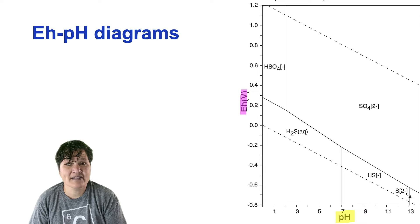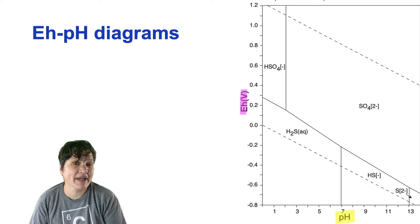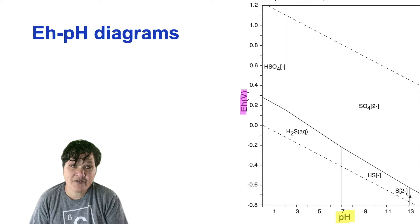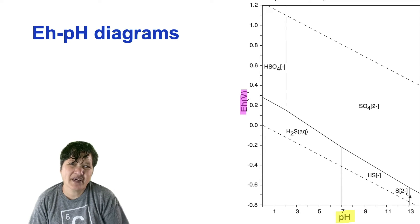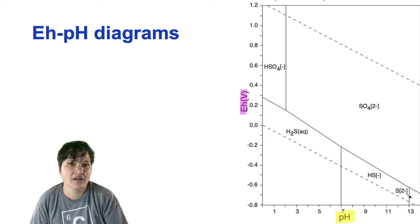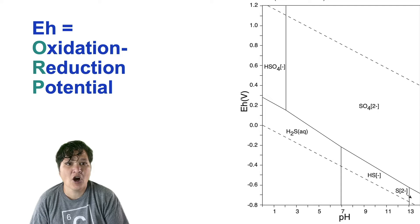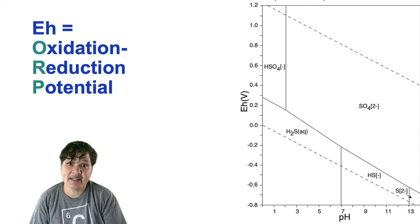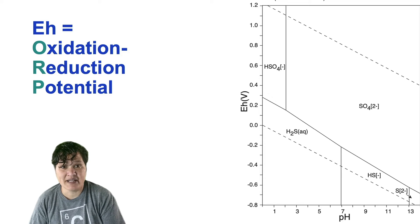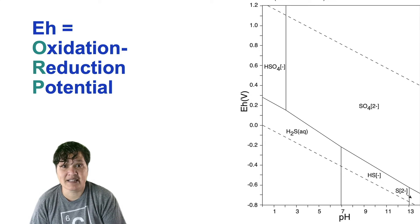Secondly, the y-axis on all EH-PH diagrams is EH, which is a quantity you probably haven't seen before. So what is it? The official answer is that it's the activity of electrons in a system, but a lot of people find that definition a little confusing. Another way to explain EH is to think of an acronym people use to talk about it. ORP is the oxidation reduction potential. I personally think this is a lot easier for people to conceptualize. The more electrons available in a system, the more reducing an environment will be. The fewer electrons, the more oxidizing it is.